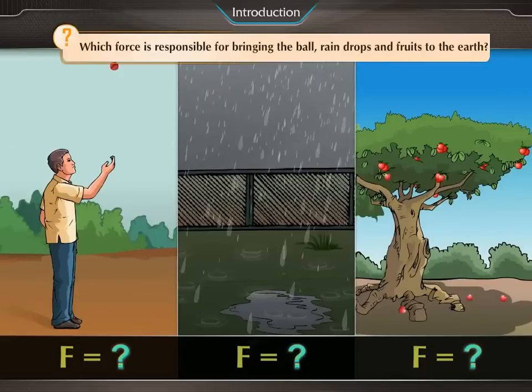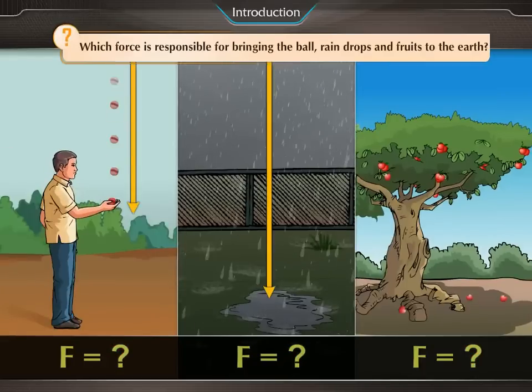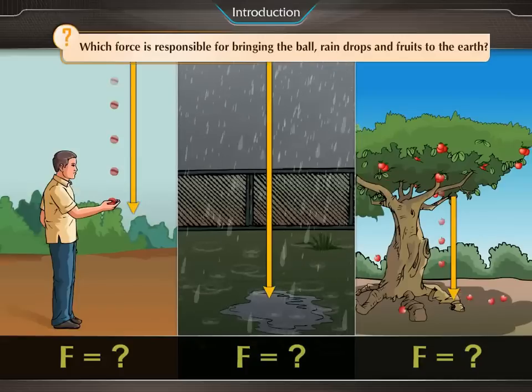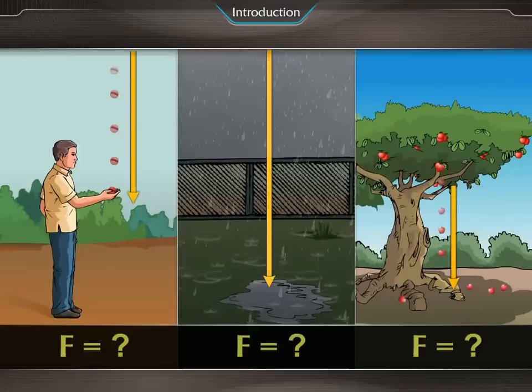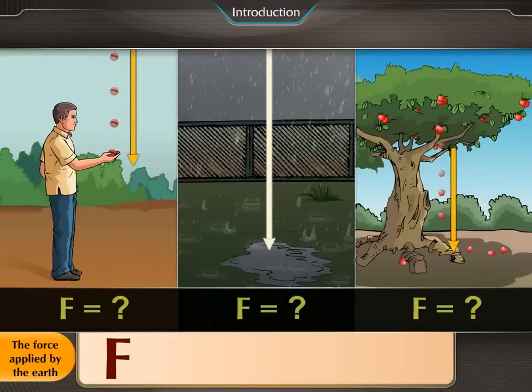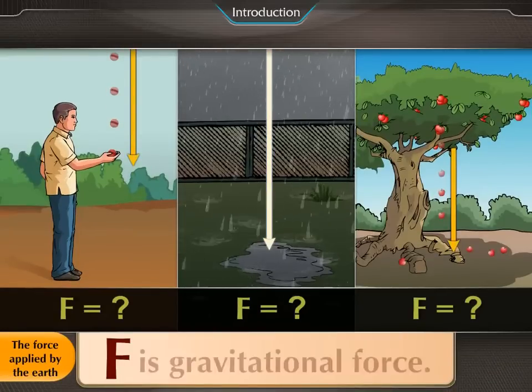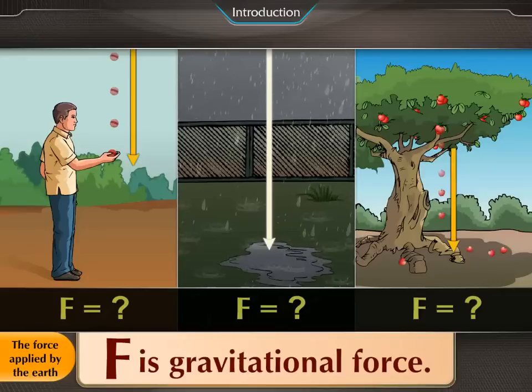Which force is responsible for bringing the ball, raindrops, and fruits down to the earth? Objects or things fall down to the earth because the earth pulls them. The force applied by the earth to bring the objects down is called gravitational force.